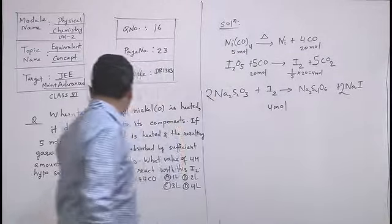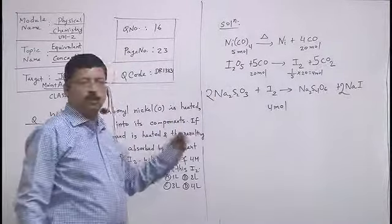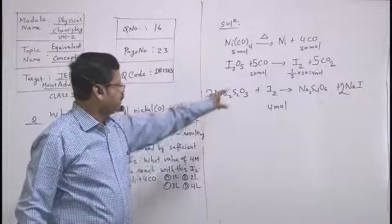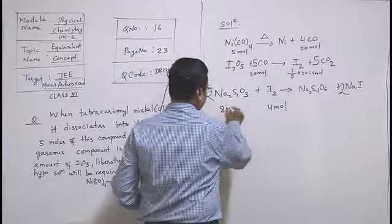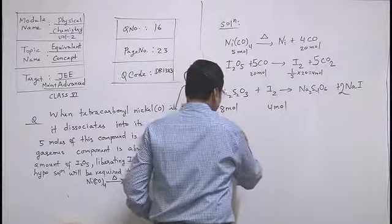What volume of 4M hypo solution? So this 4 mole, it becomes 8 mole. The mole formula is given.